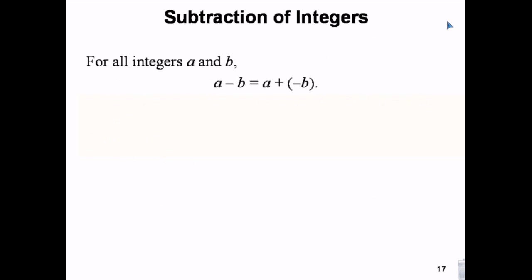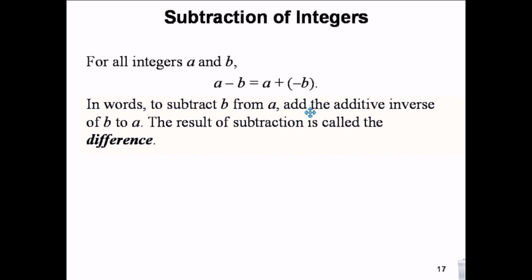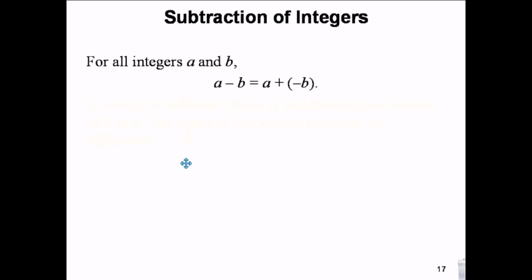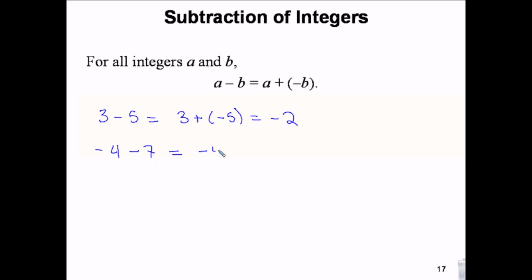Subtraction is the opposite of addition — you change subtraction to adding the opposite. So 3 minus 5 is the same as 3 plus negative 5, which is negative 2. Negative 4 minus 7 is the same as negative 4 plus negative 7 — both are negative, so you add them and get negative 11.